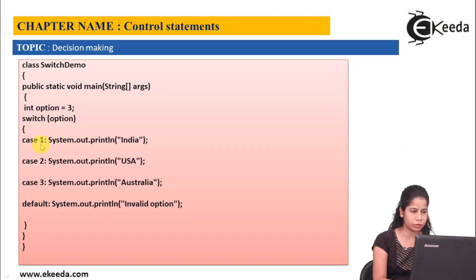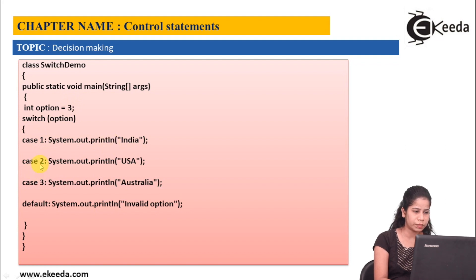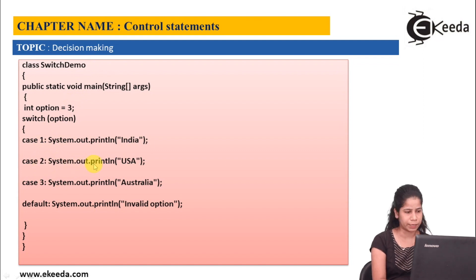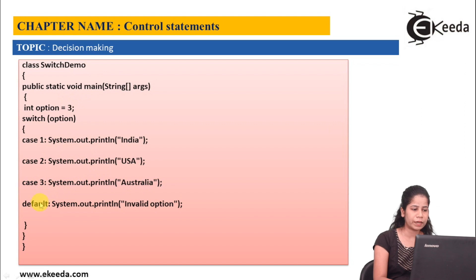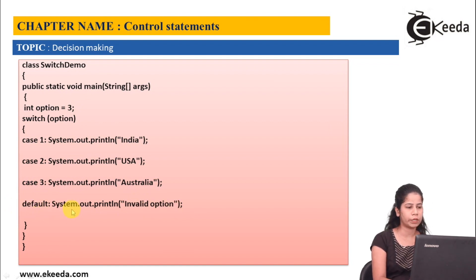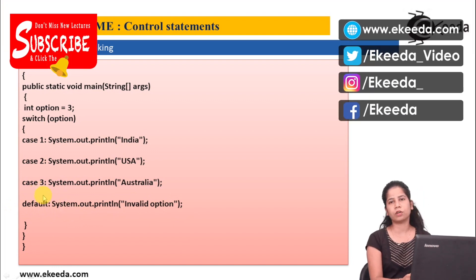The first case will get executed first. It will check case 1 against option 3 — the option is not matching, so it will not execute the statement and will go to the second case. Again option is not matching with case 2, so this is not going to execute. Then it will go to case 3, and my option is also 3, so the case and option are matching — this will print Australia. Now as there is no break statement, it will go to the default statement, which gives invalid option, so it will print invalid option also. This is known as fall through in the switch case.